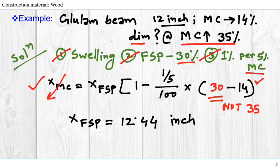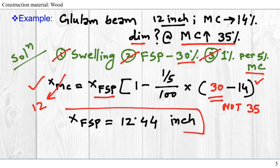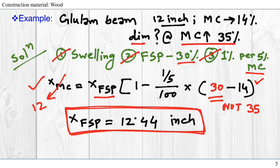Now, which one are we looking for, XMC or XFSP? For swelling, we would be looking for XFSP, because the moisture content dimension, XMC at 12 inches, is given. So if we do the calculation, we will find the swelled dimension is 12.44 inches.